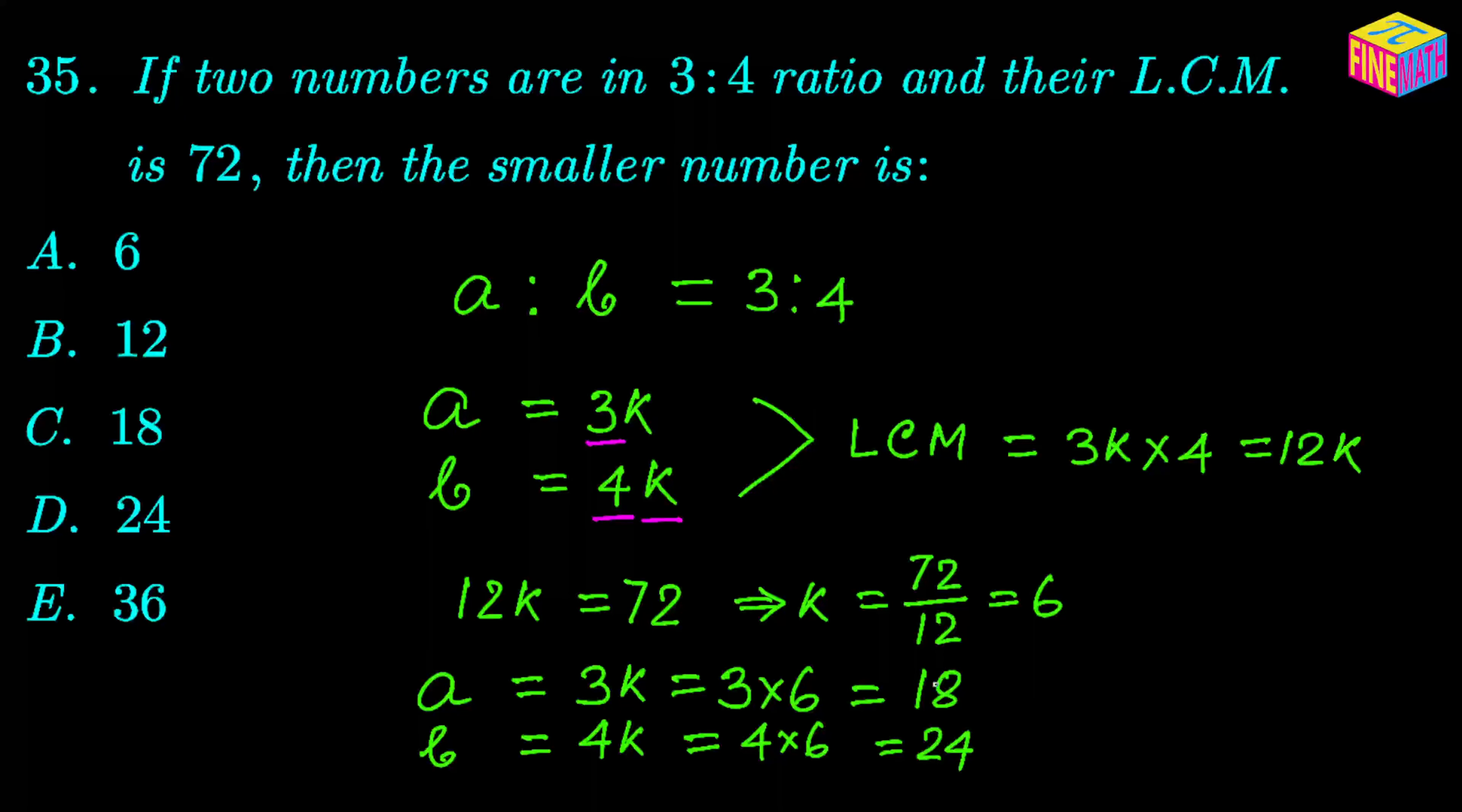So our smaller number is 18 and the larger one is 24. In the question we have been asked to find out the smaller number, and the smaller number is 18. So if you look at the answer options, 18 is under option C. So option C is the correct option.